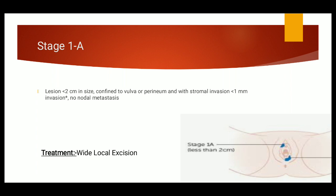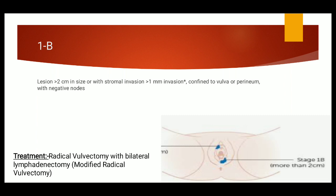Next is Stage 1B. Stage 1B is the condition in which the lesion is more than 2 cm in size with stromal invasion of more than 1 mm, confined to vulva or perineum with negative lymph nodes. Again, the lymph nodes are negative. In both Stage 1A and 1B, the lymph nodes are negative. How we treat it? Treatment is done by radical vulvectomy with bilateral lymphadenectomy, which is the modified radical vulvectomy procedure.